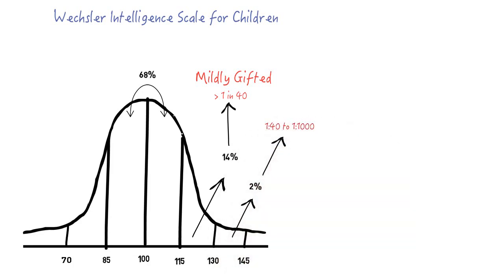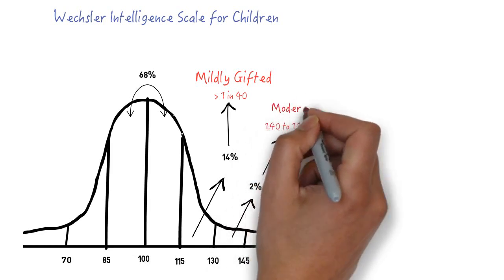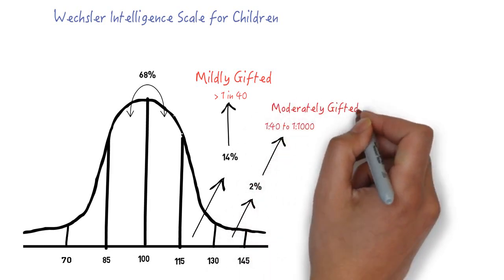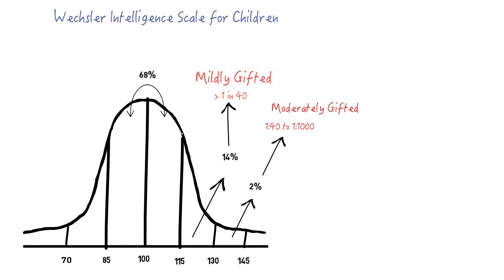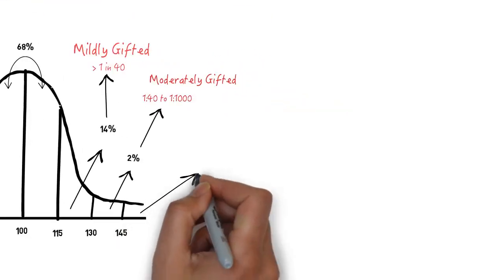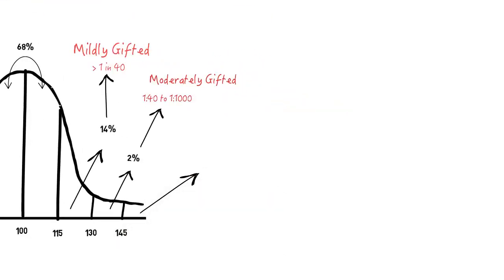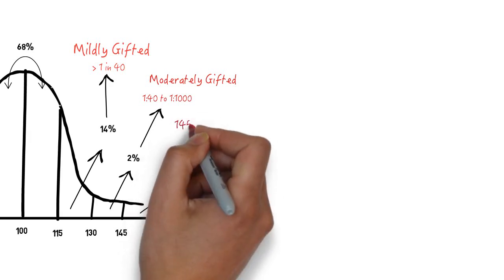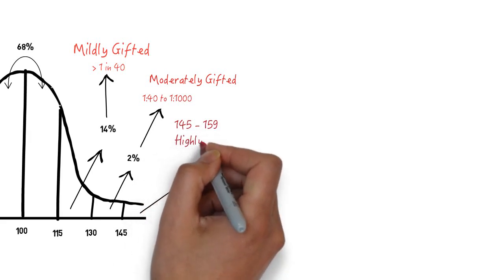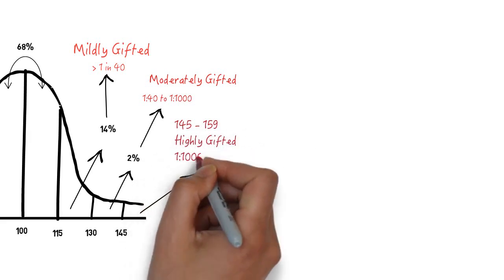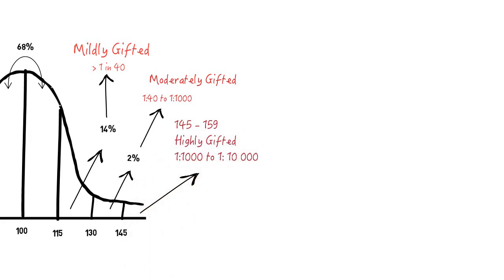The Weschler Scale originally had a ceiling or maximum measure of 160. So a number of years ago, a set of extended norms were produced in conjunction with the National Association for Gifted Children in the United States. And this allowed for IQ assessments up to 210. So between 145 and 159 IQ points, we have the highly gifted. And these represent somewhere between 1 in 1,000 and 1 in 10,000 individuals.